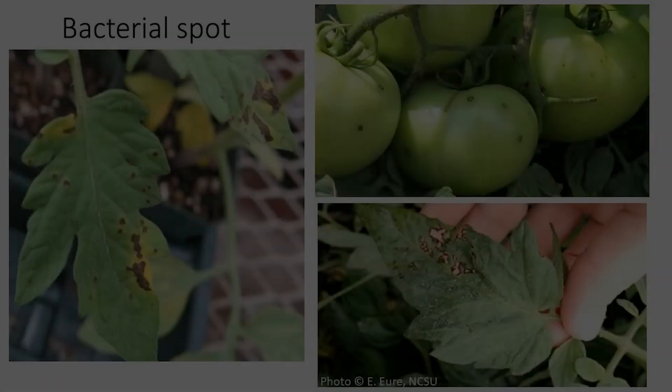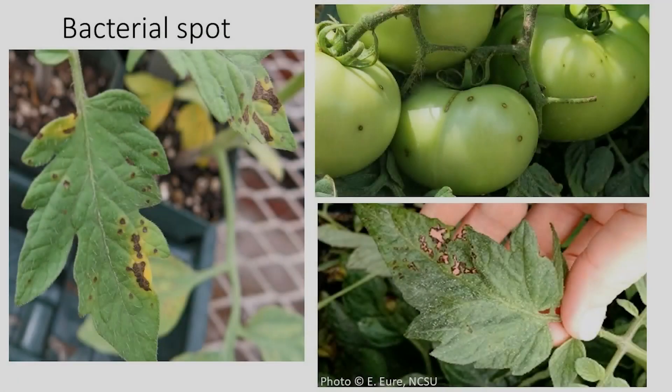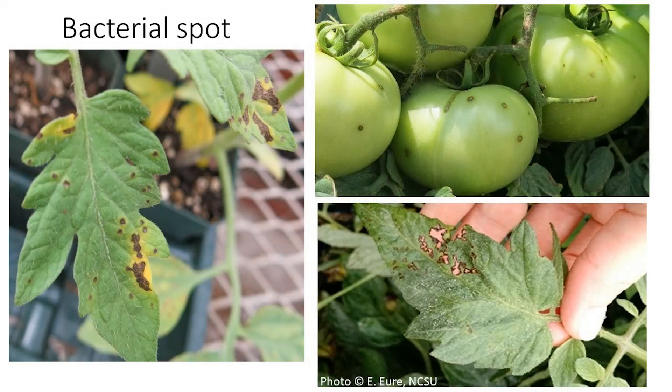Bacterial spot is caused by different species in the genus Xanthomonas. Lesions can be found on leaves, stems, and fruit. On leaves, bacterial spot typically forms numerous small lesions, less than an eighth of an inch in diameter, which quickly grow together and blight the leaf.